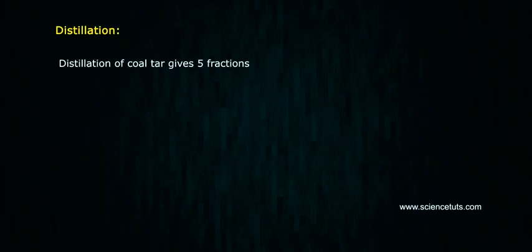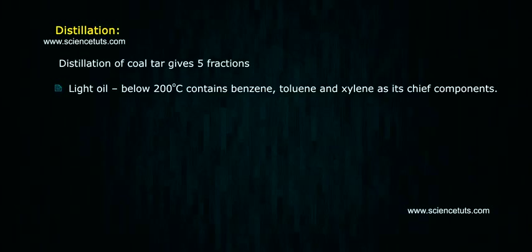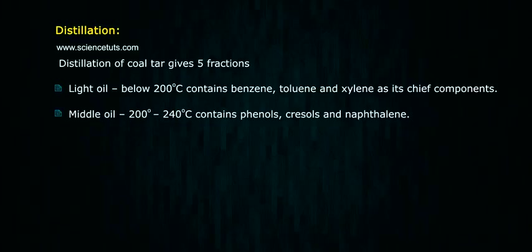Distillation of coal tar gives 5 fractions. Light oil (below 200°C) contains benzene, toluene, and xylene as its chief components. Middle oil (200°C to 240°C) contains phenols, cresols, and naphthalene.